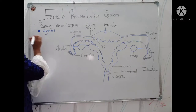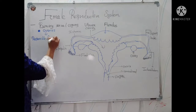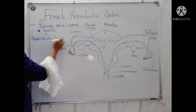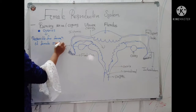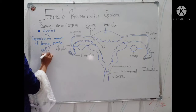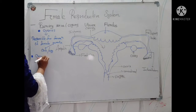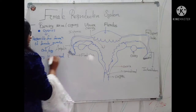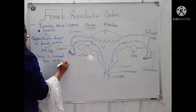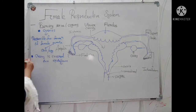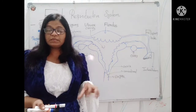The ovary is responsible for the formation or production of the female gamete, and we know that the female gamete itself is the ovum, or in other words we also call it eggs. The ovary is covered with a thin epithelial layer, and this epithelium extends the ovary toward the uterus.